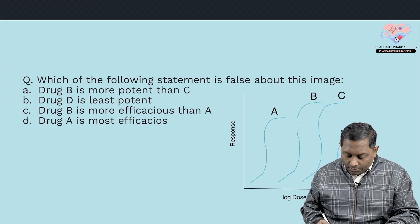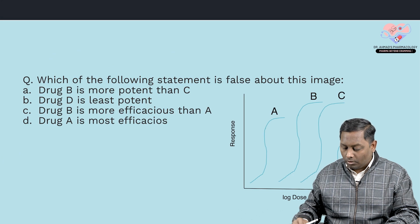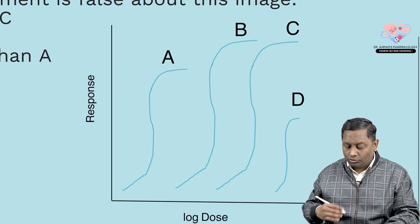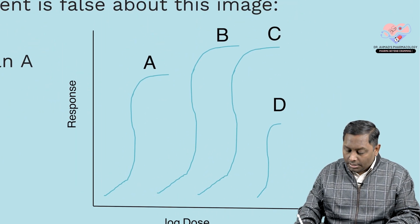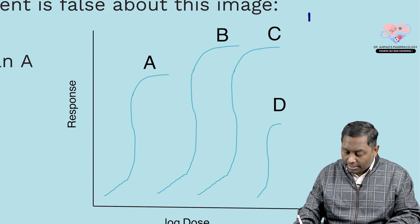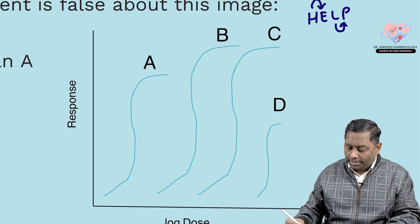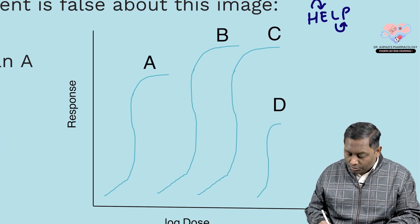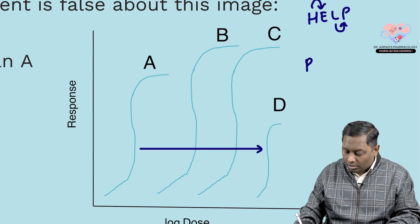Second question: which of the following statements is false about the given image? Whenever you see an image where you have to assess potency and efficacy, use the HELP mnemonic: Height tells you about efficacy, and the Left side tells you about potency.